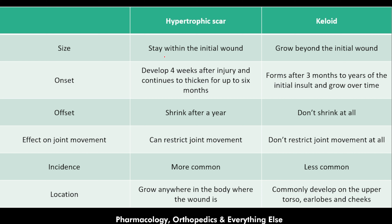Regarding size: the hypertrophic scar stays within the initial wound boundaries, while the keloid goes beyond them. Regarding onset: the hypertrophic scar develops four weeks after the injury and continues to thicken for up to six months, while the keloid forms after three months to two years of the initial insult and grows over time.